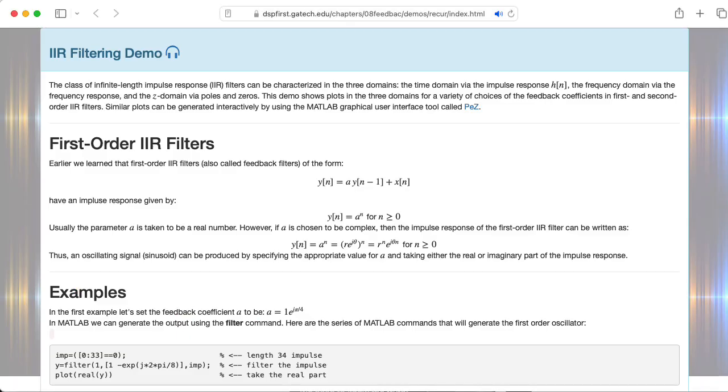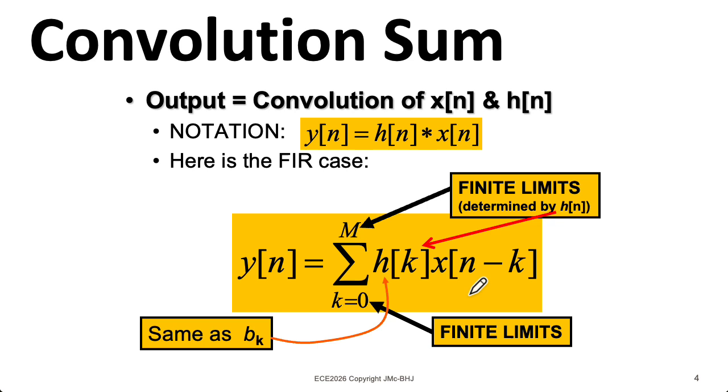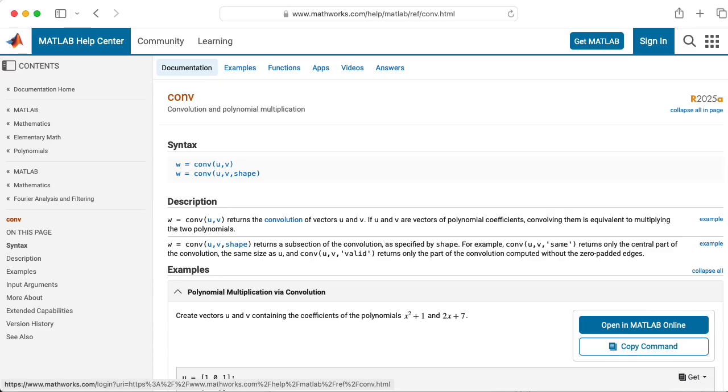Later in the class, we'll look at infinite impulse response filters, where the idea of taking an input and convolving it with an impulse response still applies as a mathematical concept. But for IIR filters, the relationship between the filter coefficients and the impulse response is vastly more complicated. If you have some sequences you need to convolve, you can ask MATLAB to do it for you. But to make sure you understand convolution, it's helpful to work out a few examples by hand.